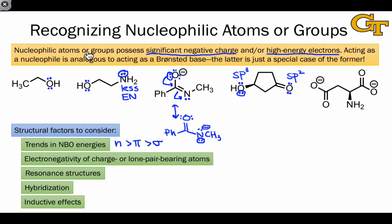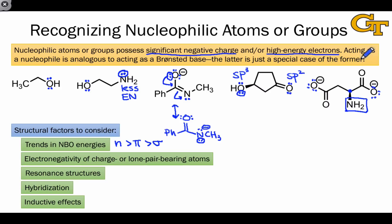The final factor worth considering is inductive effects. In a case where we have two negatively charged oxygen atoms that look very similar — both resonance stabilized, both with lone pairs and negative charge — the key difference is that one is closer to an inductively electron-withdrawing or electronegative group like NH2 than the other. Because of the withdrawing effect of the NH2 group, the carboxylate closer to NH2 is just a little more nucleophilic than the other. So to summarize: the things to think about in evaluating nucleophilicity are NBO energies, electronegativity, resonance, hybridization, and inductive effects — these are really a generalization of the factors governing acidity and basicity.